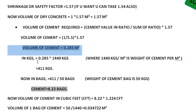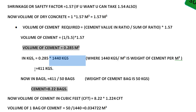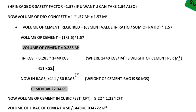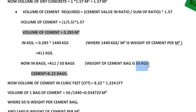Now we convert this volume of cement to kilograms. We multiply 0.285 cubic meters by 1440 kg, because 1440 kg is the weight per cubic meter of cement. So 0.285 × 1440 = 411 kg of cement is required. To convert this to number of cement bags, we divide 411 by 50, because one cement bag weighs 50 kg. So 411 ÷ 50 = 8.22 bags of cement.